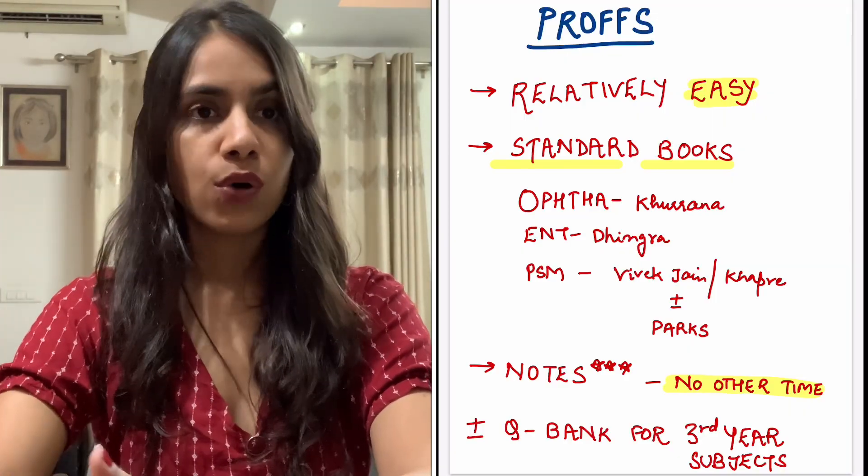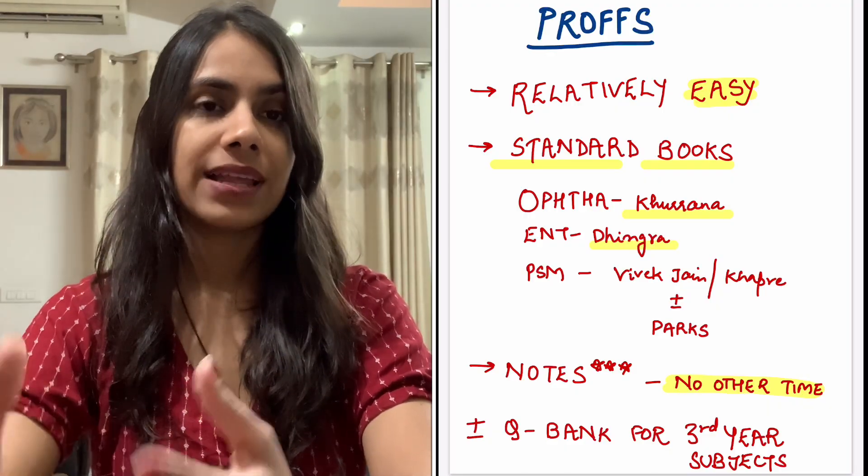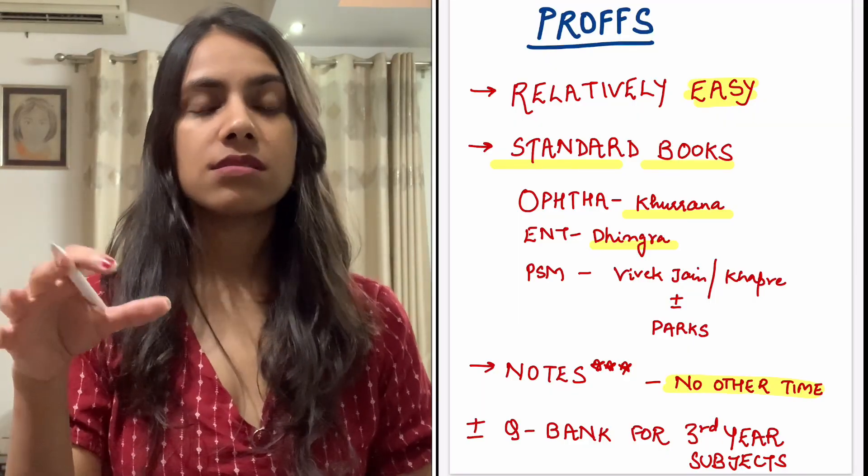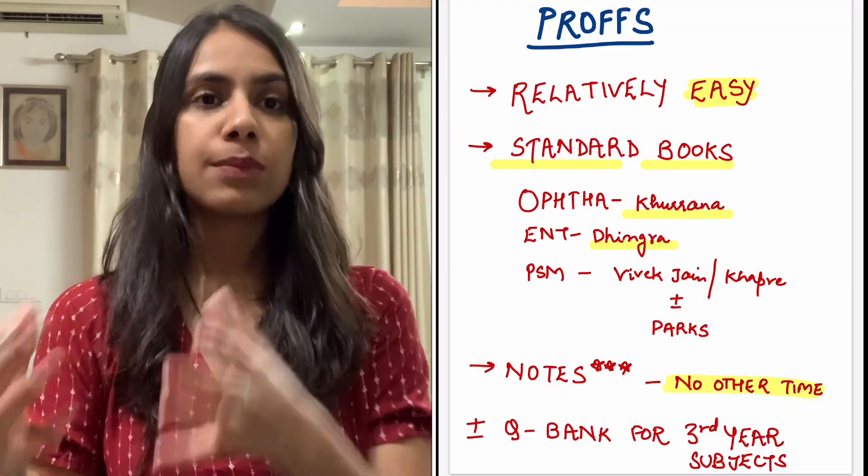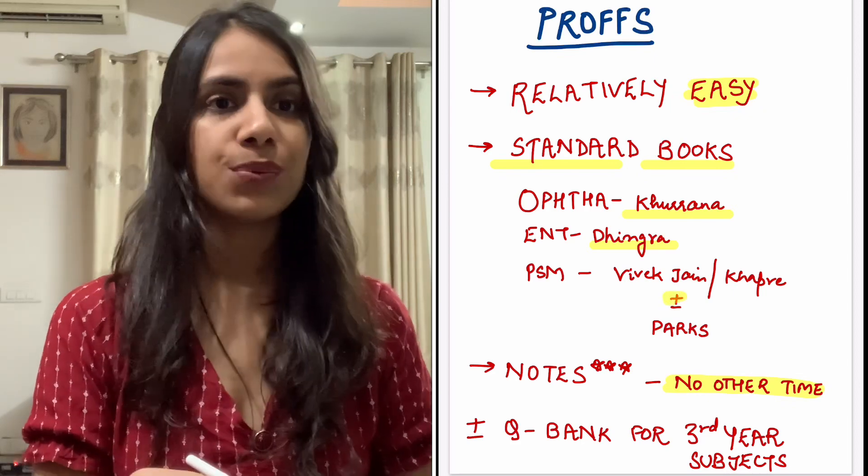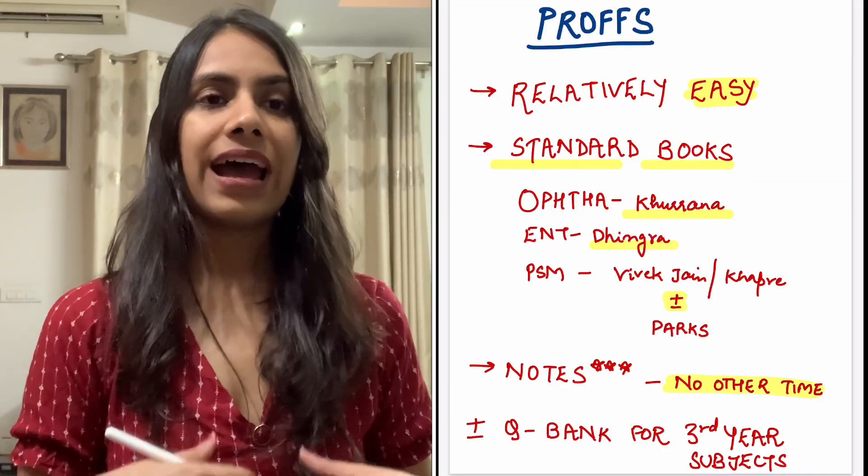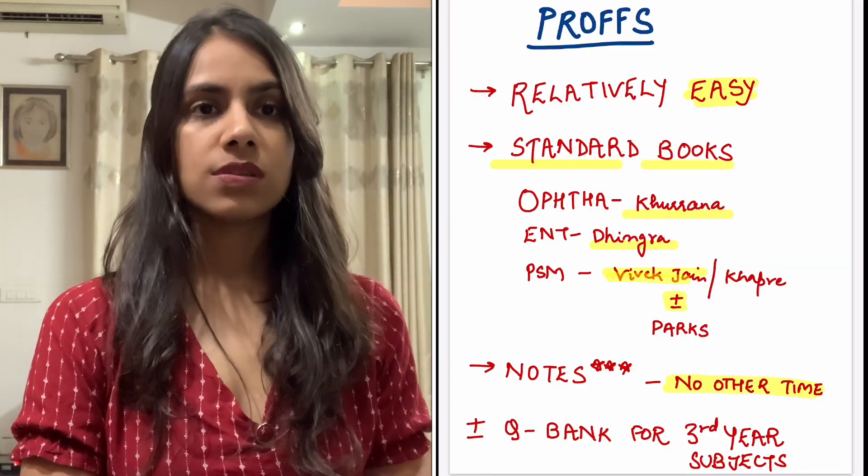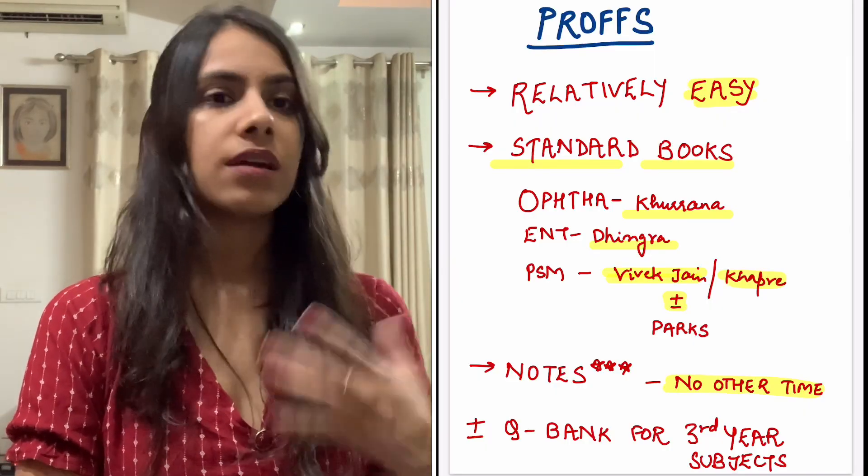I chose Khurana for Ophtha, Dhingra for ENT, and for PSM, I know Parkes is very humongous and a big headache to most. But I read enough parts of it that I could understand supplementary books and notes better, and I could reproduce that in a subjective way for my prof exams. However, if you don't want to delve that deep into it, you can always take a senior's marked books and only read your previous year questions, and make these supplementary books your main thing for your exams.